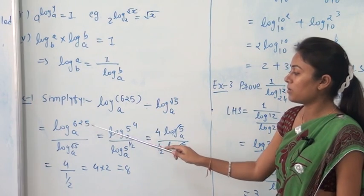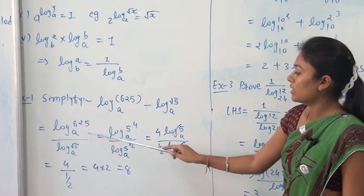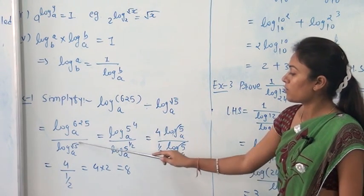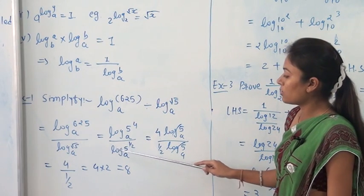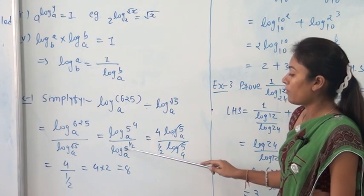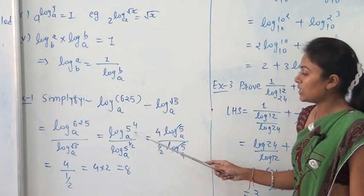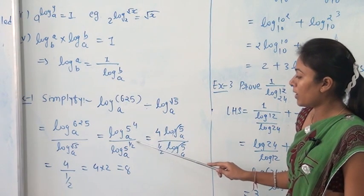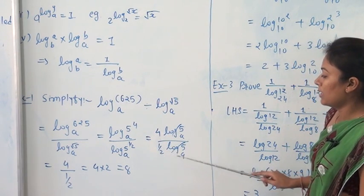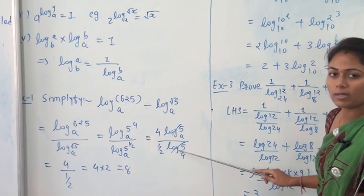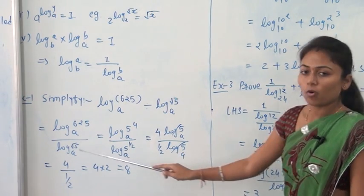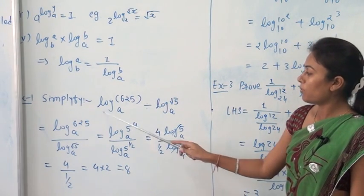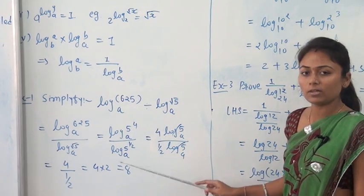We know that 625 equals 5 raised to 4, and square root 5 equals 5 raised to 1 by 2. So the expression becomes log 5 raised to 4 base A upon log 5 raised to 1 by 2 base A. By using the logarithm of power rule, this equals 4 log 5 base A upon 1 by 2 log 5 base A. Log 5 base A cancels, giving 4 divided by 1 by 2, which equals 4 times 2, equal to 8.